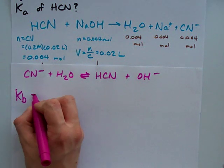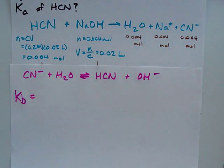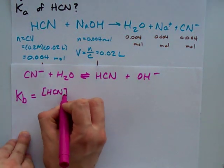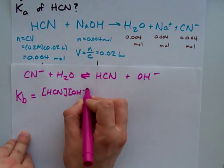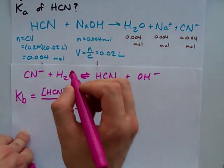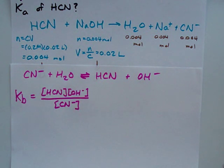From that, you guys know KB. We're starting with the base, we use KB, not KA. And that is going to be HCN times OH- all over CN-. We don't include water because it's a liquid, and liquids don't appear in equilibrium expressions.